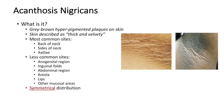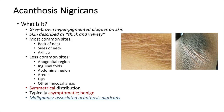One important aspect of acanthosis nigricans is that there is a symmetrical distribution in the formation of the hyperpigmented skin. Another important aspect is that this condition is almost always asymptomatic and benign. However, a rare condition that can occur is known as malignancy-associated acanthosis nigricans, which typically occurs in older adults and has a very fast onset.